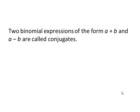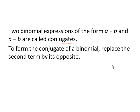Two binomial expressions of the form a plus b and a minus b are called conjugates. To form the conjugate of a binomial, we simply replace the second term by its opposite.